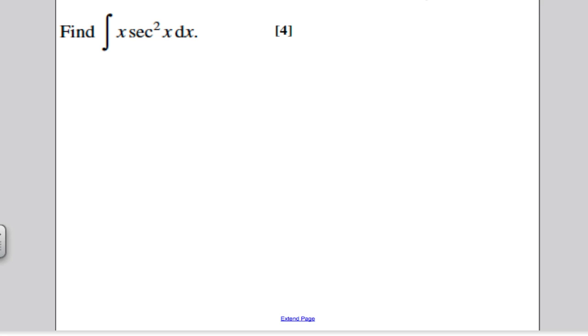Immediately you should look at this and think to yourself, I have two different functions, x and sec squared x, multiplying by each other in an integral. So I'm going to use what's called integration by parts. Straight away you should be spotting that, integration by parts.